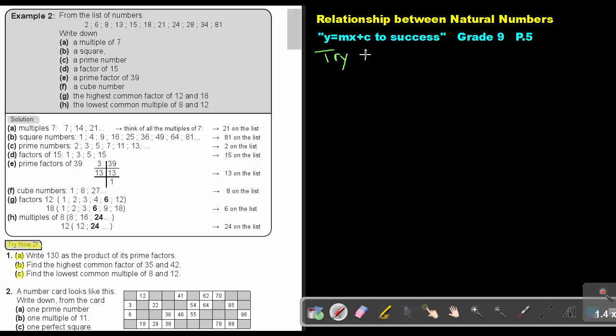Try now 2. Write 130 as the product of its prime factors. Take 130 and start with your little blocks. Remember, the prime numbers are the divisors. What are the prime numbers? 2, 3, 5, 7, 11, and so on.